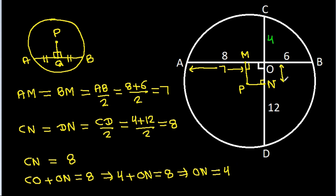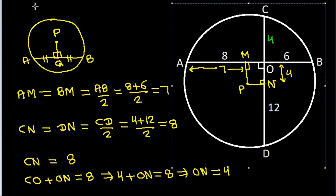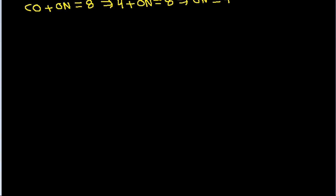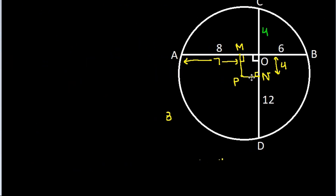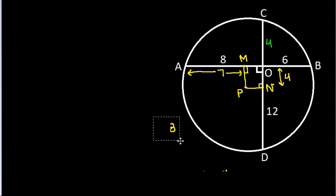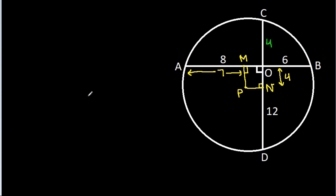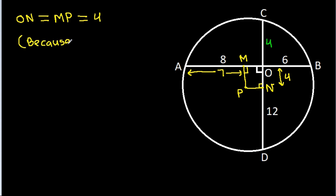ON is 4. Now, ON equals MP, which is also 4, because O, M, P, N form a rectangle.